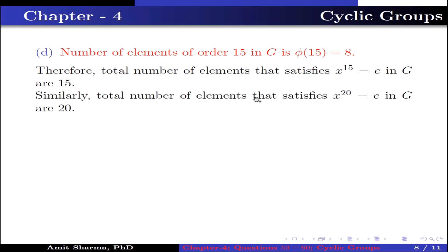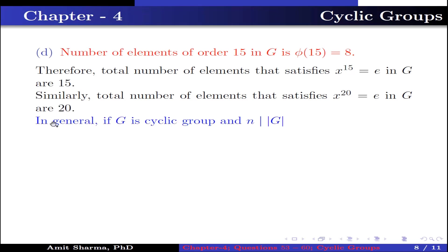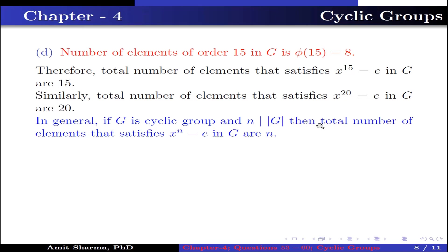Similarly, the total number of elements satisfying x²⁰ = identity in G is 20. In general, if G is a cyclic group and N divides the order of G, then the total number of elements satisfying xᴺ = identity in G is N.